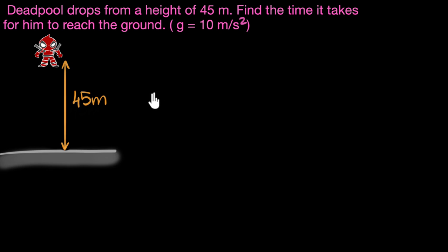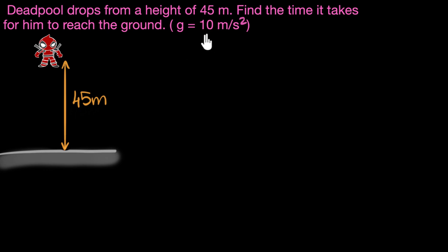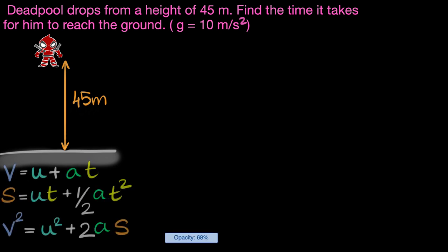Well, remember that whenever things are falling under gravity, they have a constant acceleration of 9.8 meters per second squared. In this problem, they've asked us to round it off to 10. So this is the acceleration with which Deadpool is going to fall down. Whenever something has a constant acceleration, we can use three equations of motion to solve them.